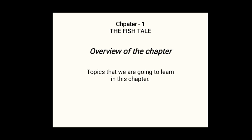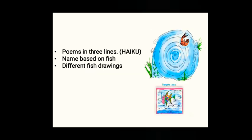First, what is the name of the chapter? Don't get confused — 'tale' means story and 'tail' means poonch. This chapter is about a fish's story. This chapter starts with poems in three lines. In Japan, these poems are known as haiku. In the beginning of the chapter, there are some haiku poems that we will learn.